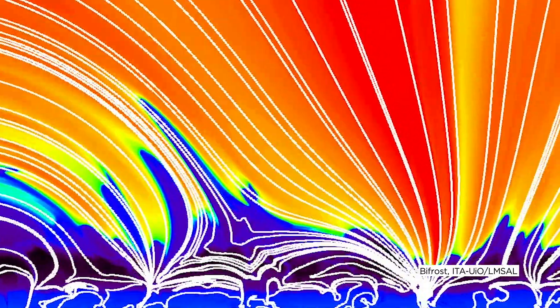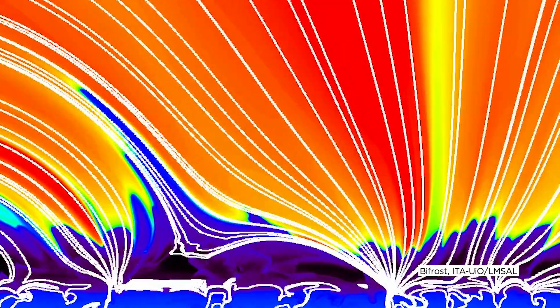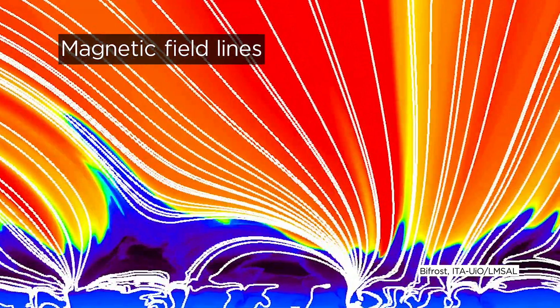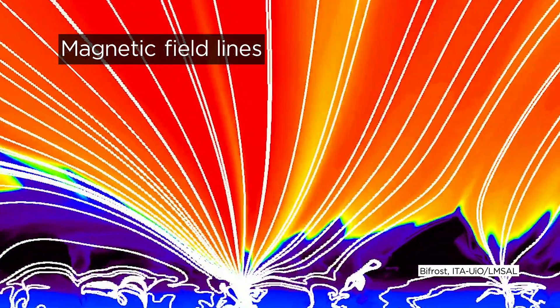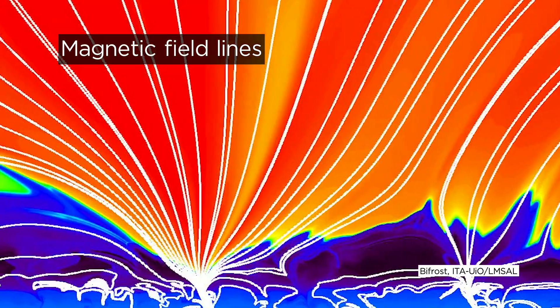Scientists believe that this interaction drags tangled magnetic field lines up above the sun's surface, allowing them to straighten and expel solar material at high speeds, similar to a whiplash.